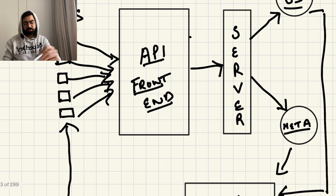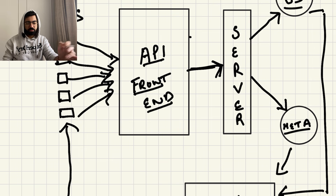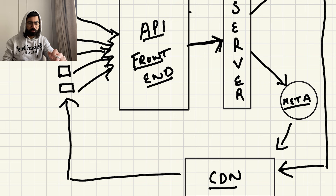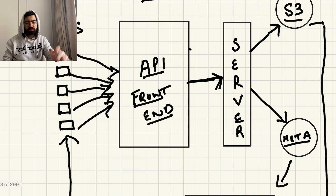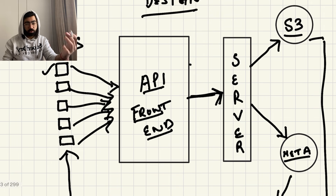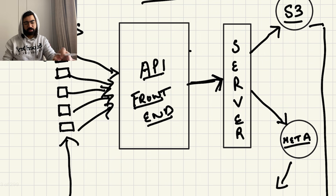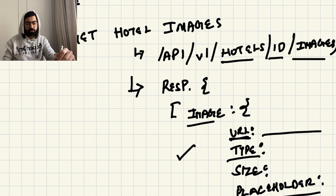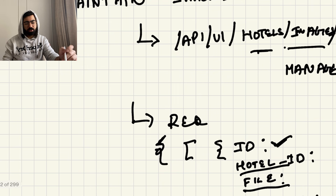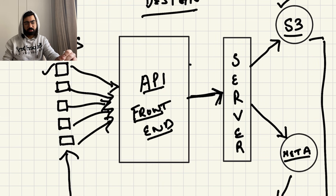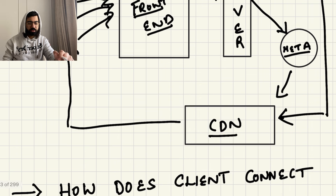At a high level, client devices make a call to the API frontend, which then makes a call to the server, which serves the images. These images are generally stored in object storage or blob storage — for example AWS S3 or Google GCS. Metadata for these images will be stored in a metadata database. The client sees the image via a URL returned in the API response.